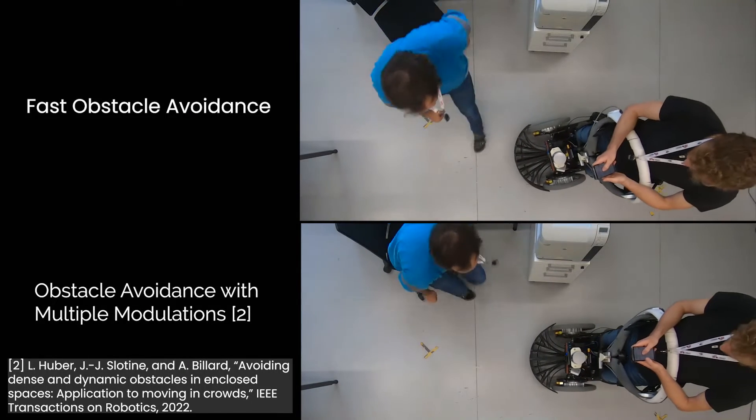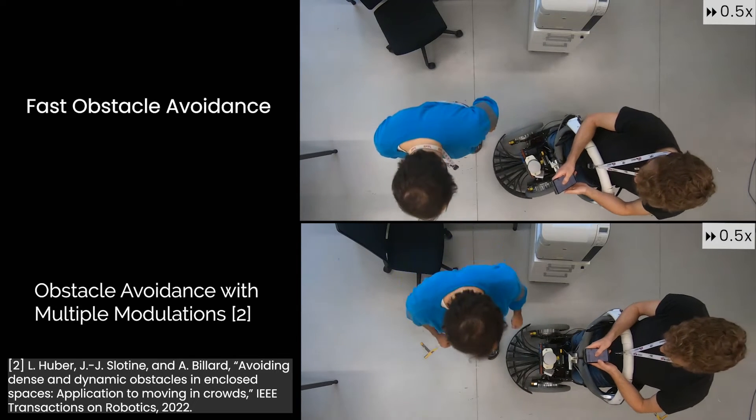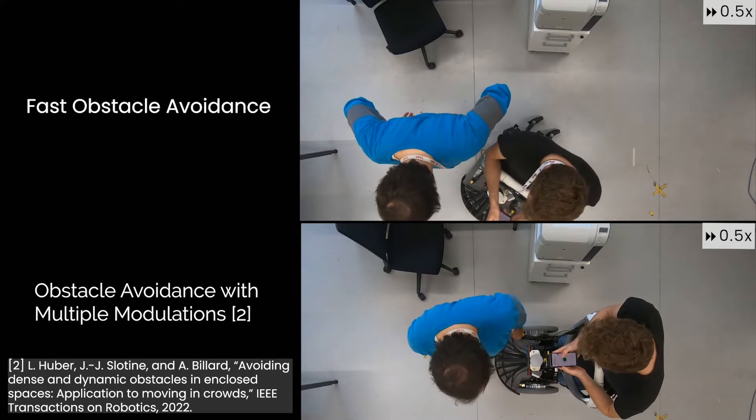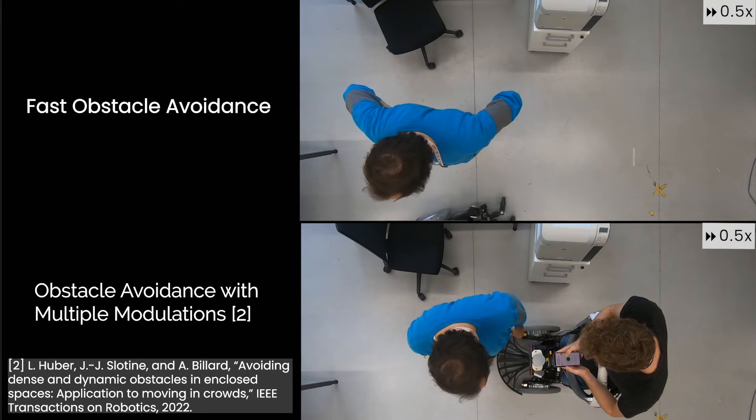Because the fast obstacle avoidance algorithm is applied directly to sensor data, its control update rate is much shorter than comparable algorithms. As a result, it can adapt to rapid changes in the environment.